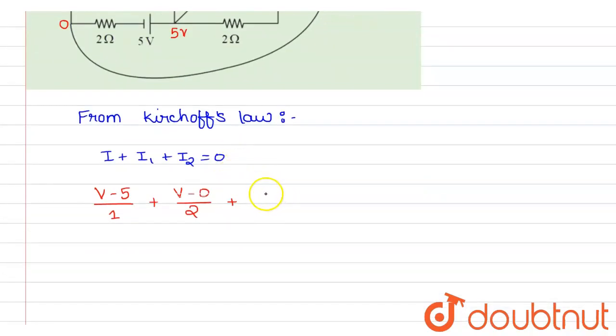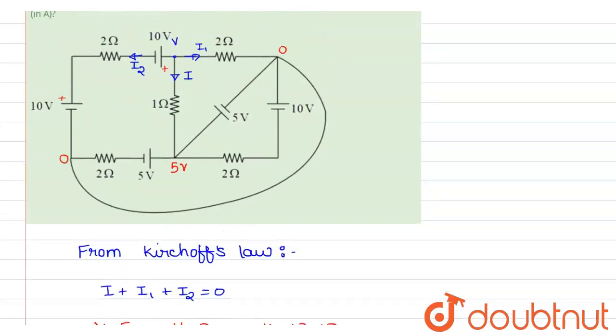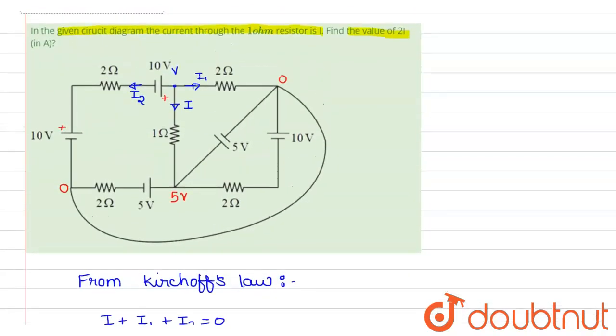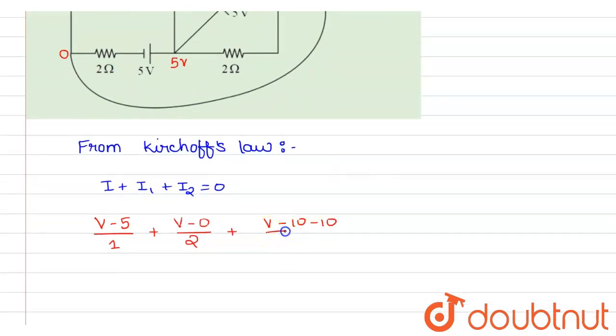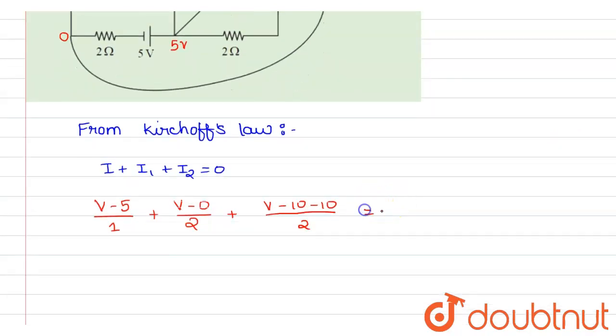So I am writing here: v minus 10 minus 10, and the equivalent resistance of this part of the circuit will be 2. So it is (v - 20)/2, and it will be equal to zero.